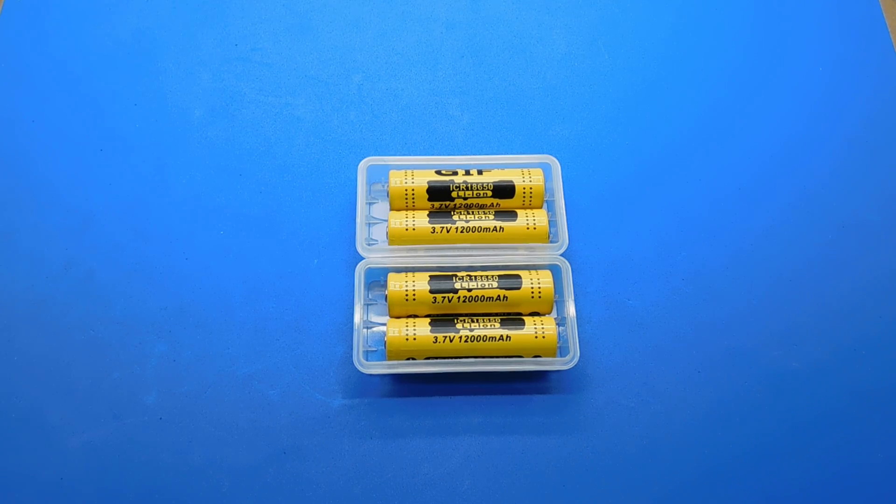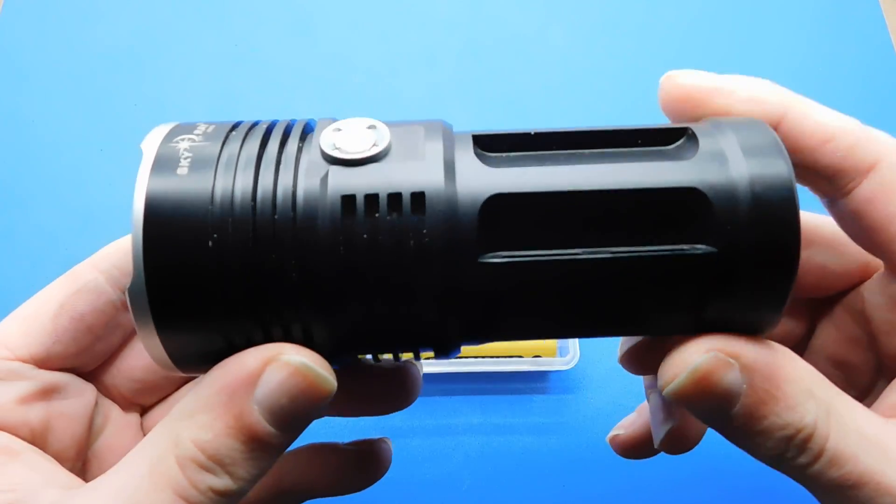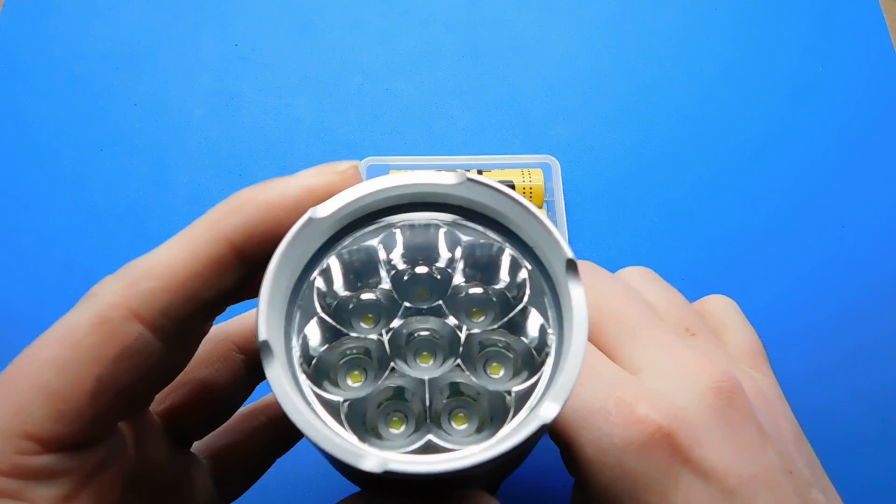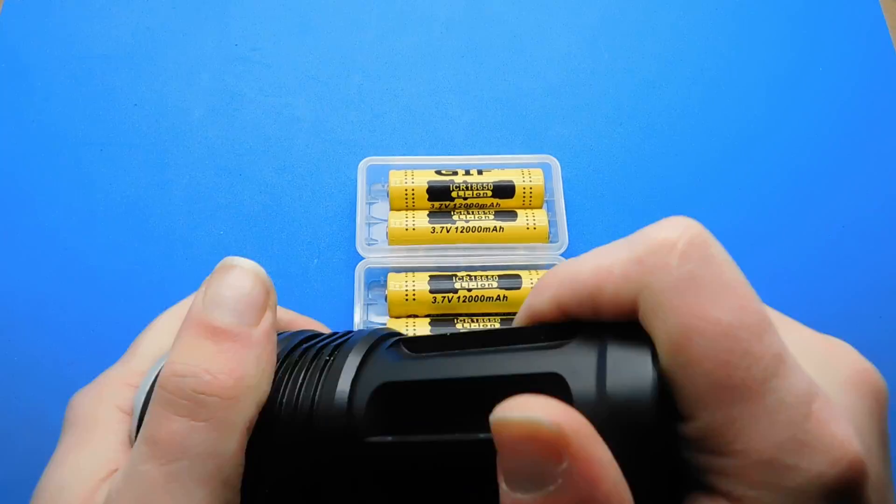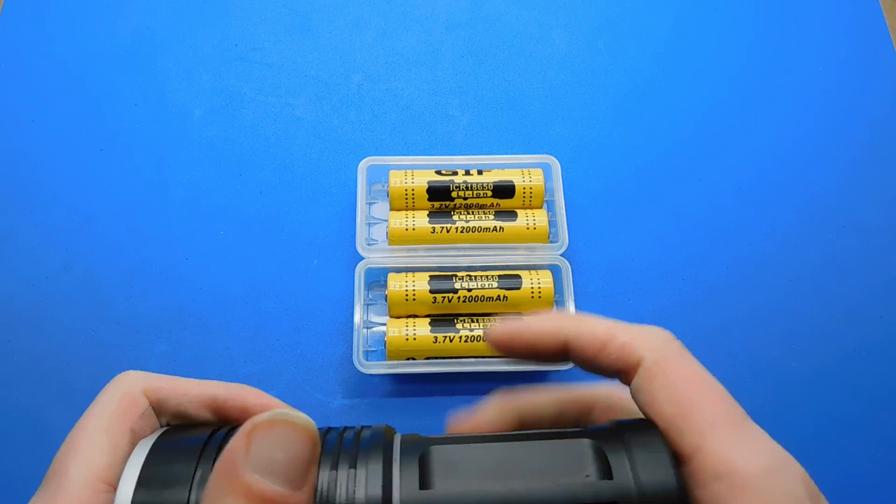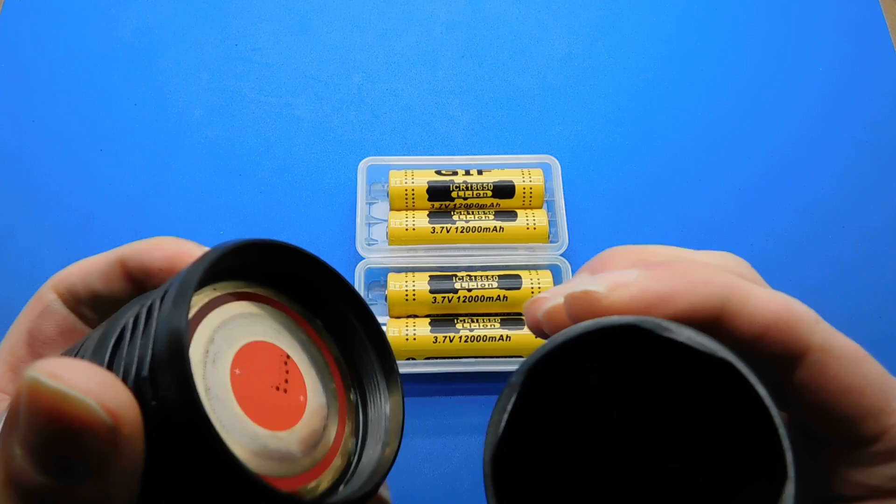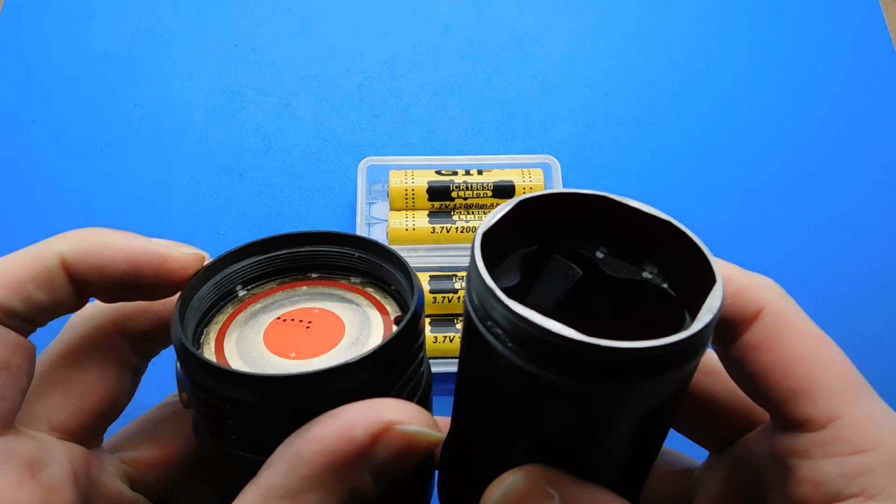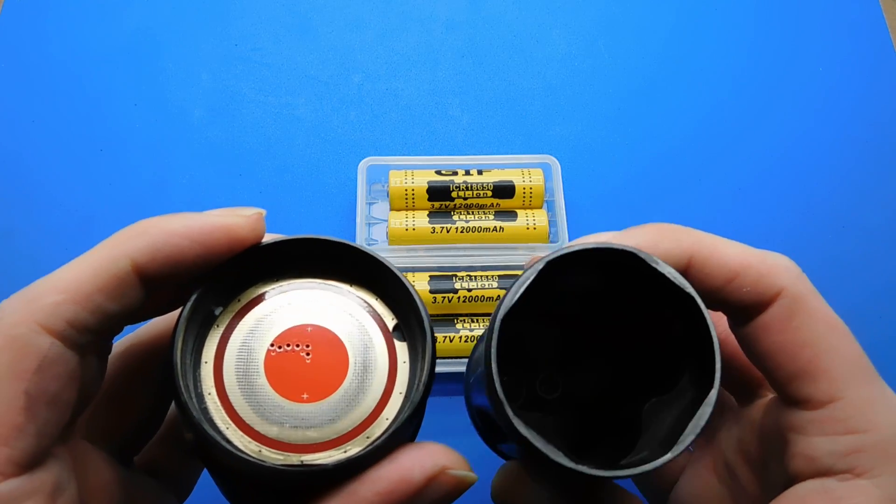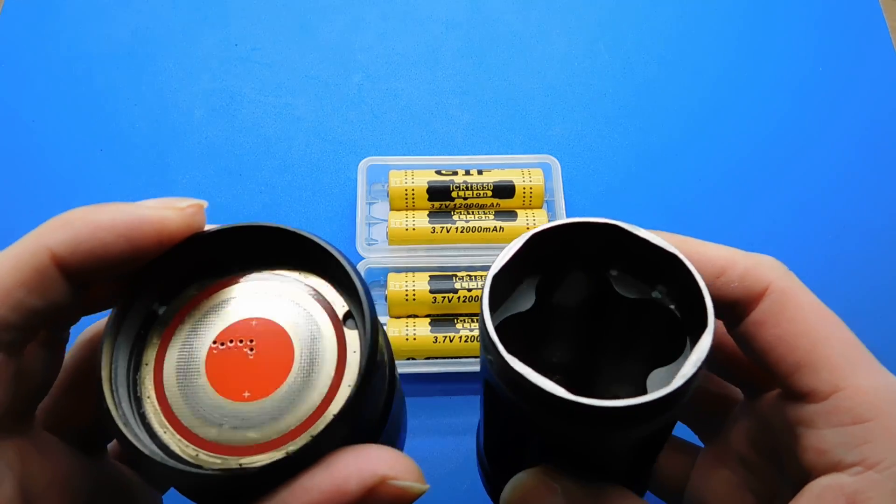I bought these two sets of batteries to power these torches, Sky Ray Kings they're called, with eight LEDs. They need four batteries to work properly. They need to be button top cells and I've been struggling to find button top cells. I only have flat top, so I had to buy these to run these torches.